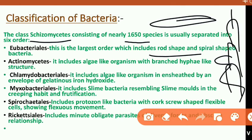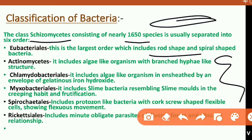Another order is Chlamydobacteria, which are encased by an envelope of gelatinous iron hydroxide. The next order is Myxobacteria, which grow on dead and decaying matter. Another order is Spirochaetes, which are protozoan-like in structure — they have flexible, corkscrew-shaped cells that show a flexuous movement.